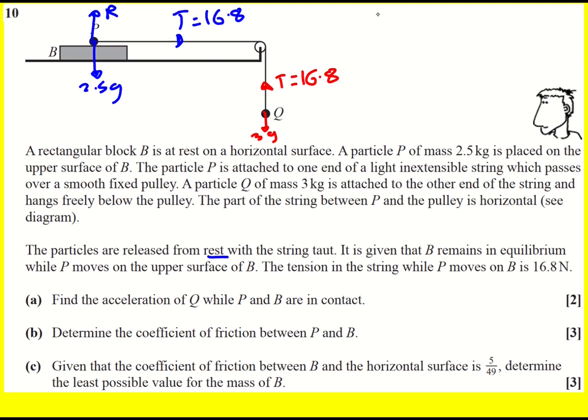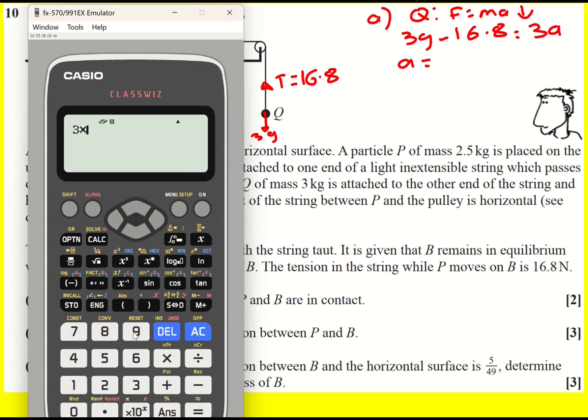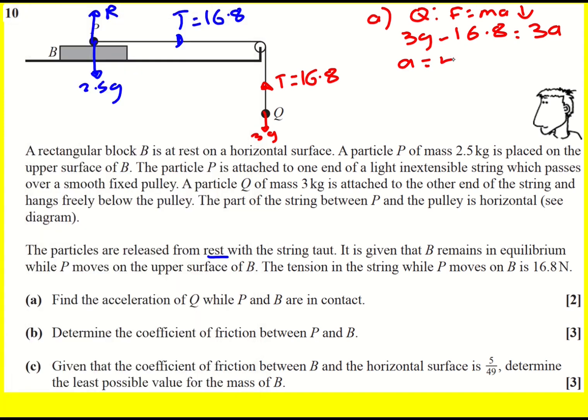Find the acceleration of Q while P and B are in contact. So I can focus on Q and apply F equals MA down. Therefore I've got 3G minus 16.8. That's my resultant force acting down. It's going to equal 3A. I can work out 3G minus 16.8 and then I can divide that by 3. 4.2 meters per second squared.